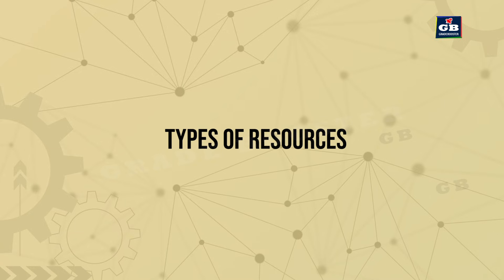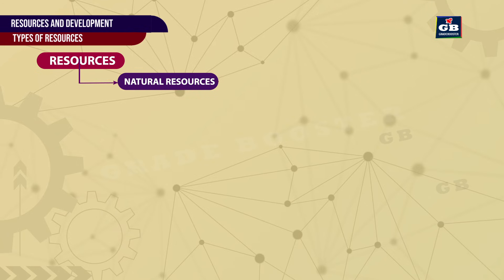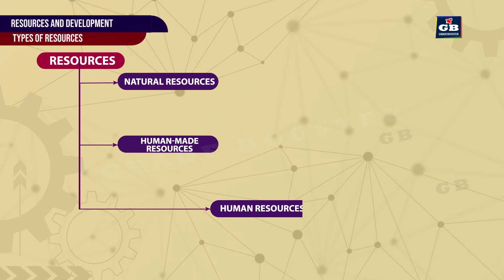Types of Resources. Resources are categorized into three main types: Natural Resources, Human-made Resources, and Human Resources.